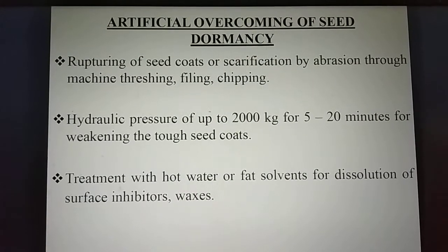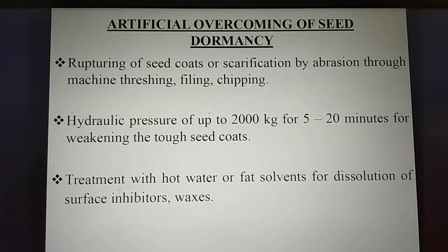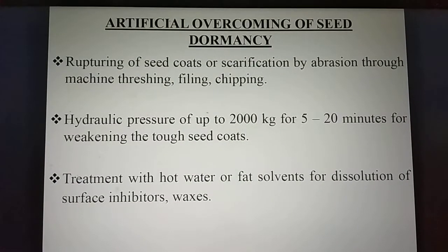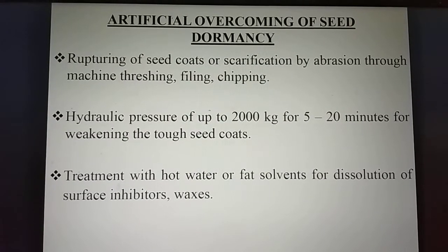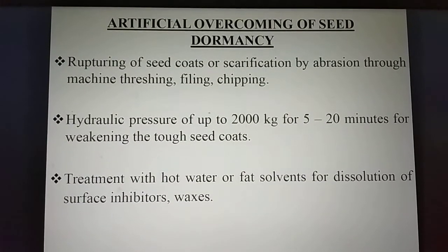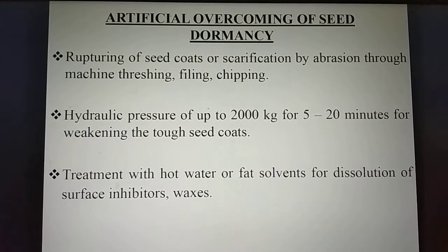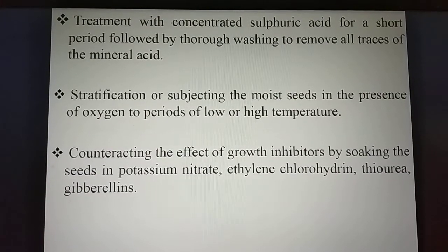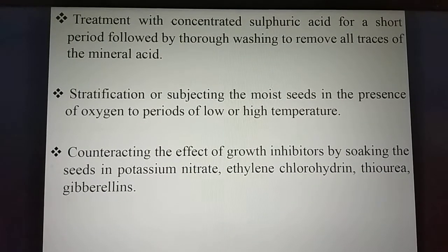Artificial overcoming of seed dormancy includes: rupturing of seed coats or scarification by abrasion through machine threshing, filing, or chipping. Hydraulic pressure of up to 2000 kg for 5 to 20 minutes for weakening the tough seed coats. Treatment with hot water or fat solvents for dissolution of surface inhibitors and waxes. Treatment with concentrated sulfuric acid for a short period, followed by thorough washing to remove all traces of the mineral acid.